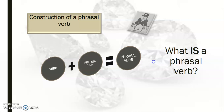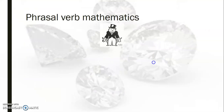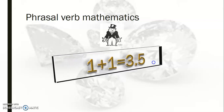So that's the answer to the question: what is a phrasal verb? Now, I like to refer to what I call phrasal verb mathematics, where one plus one equals three and a half. The one is a verb, the other one is a preposition, but when you put them together, they come out to be something completely different from the words that we see.